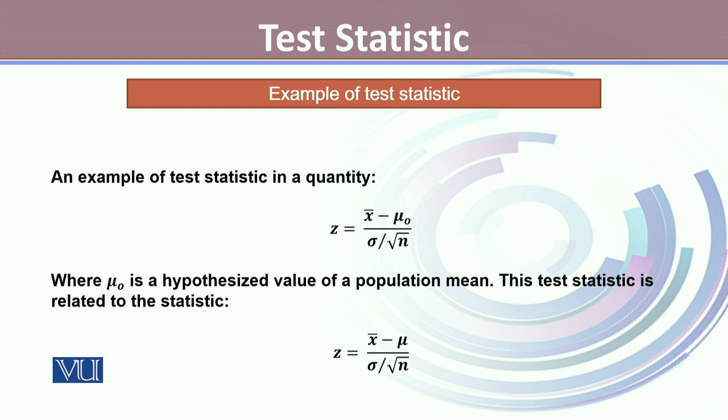So as an example of test statistics in a quantity, let's talk about the z test where we get z statistics where z equals x bar minus mu naught divided by sigma over square root n.